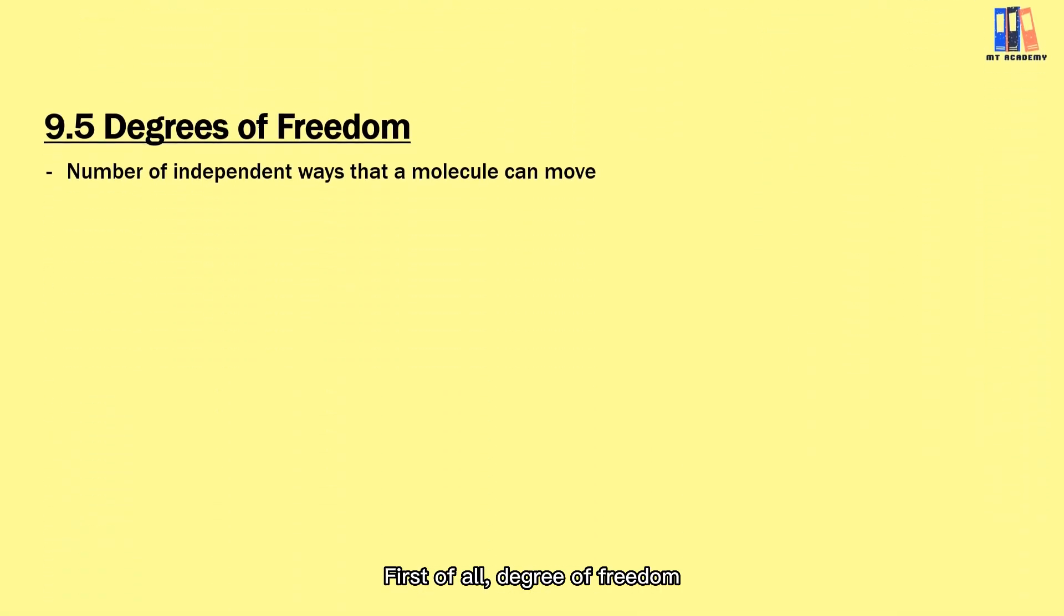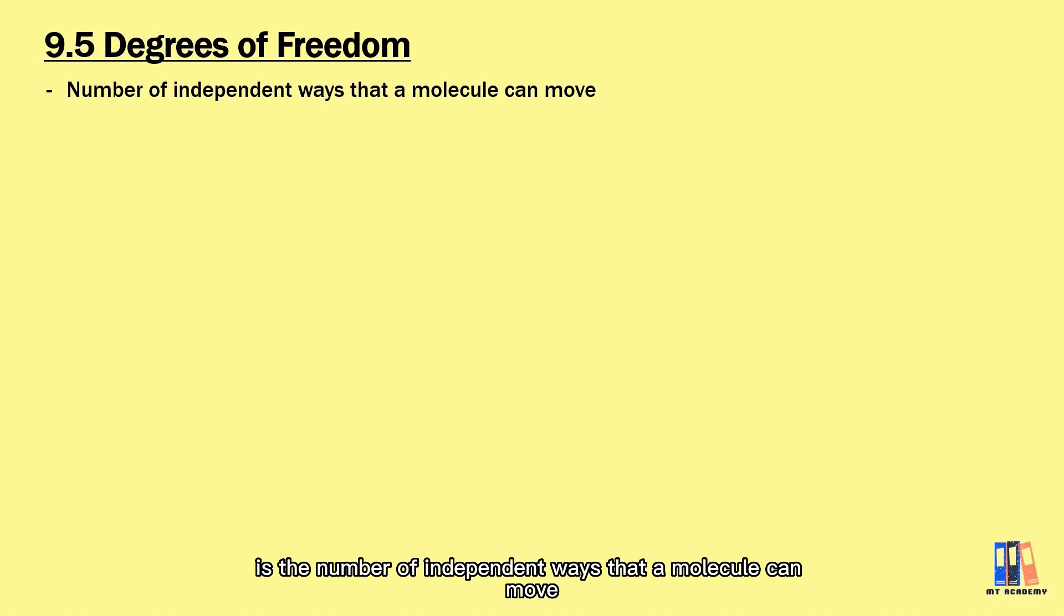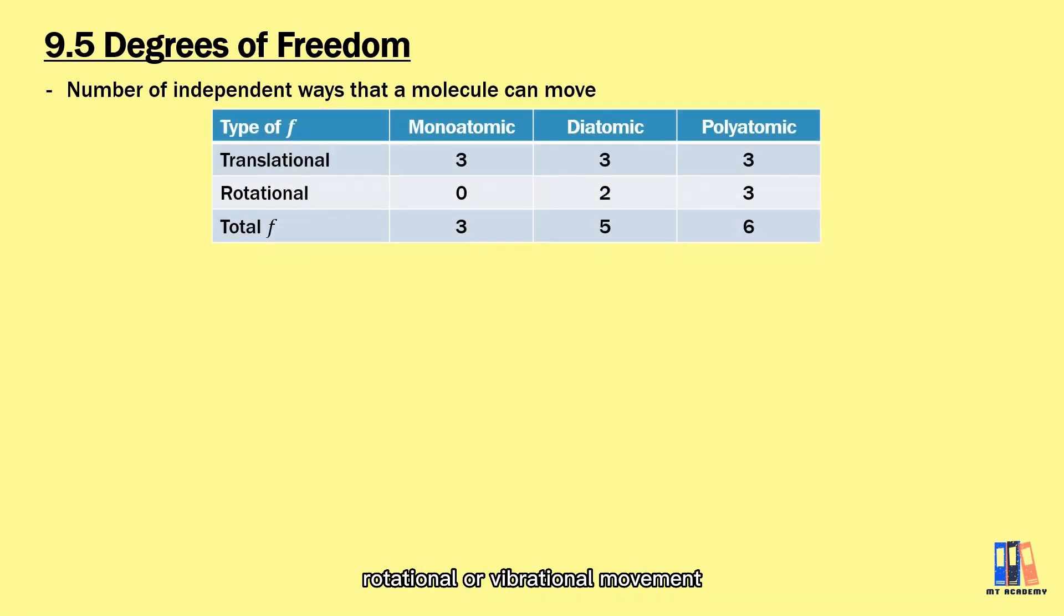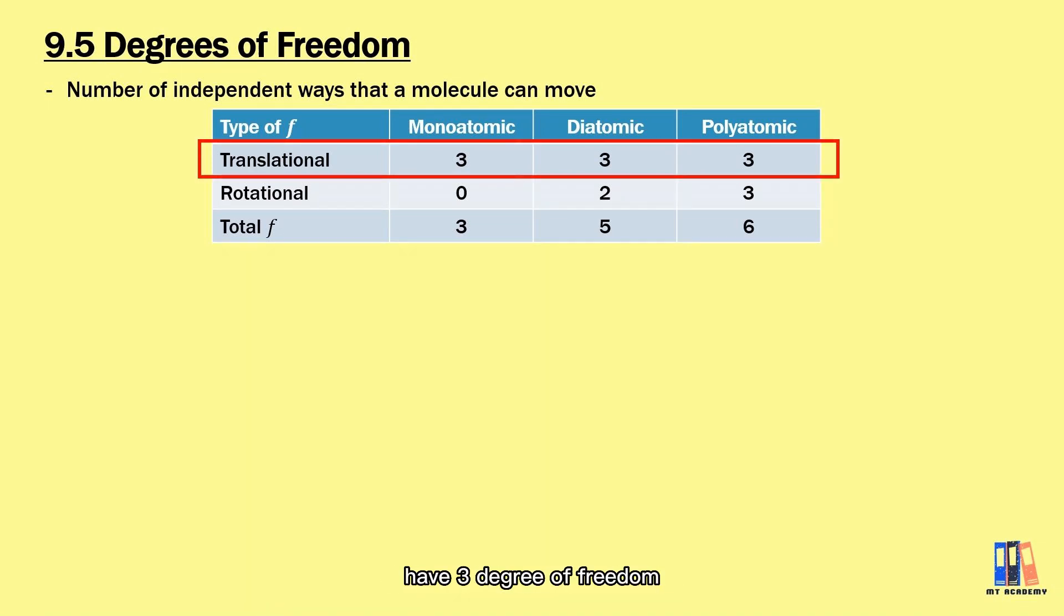First of all, degree of freedom is the number of independent ways that a molecule can move. It can be translational, rotational or vibrational movement. Basically, we look at 3 types of molecules which include monoatomic, diatomic and polyatomic. All these 3 types of molecules have 3 degrees of freedom from the translational kinetic energy.